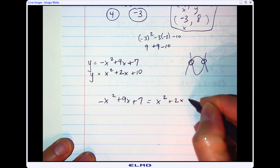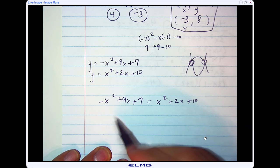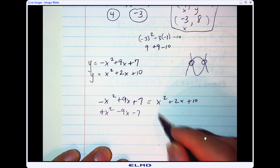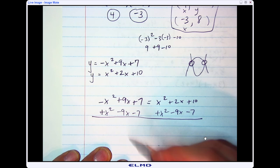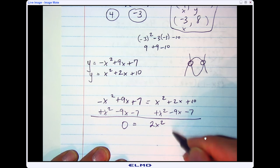Now it doesn't really matter which one you move to make it equal to zero, but I usually like to keep my x squared positive. So I'm going to move this whole equation over to the other side by doing the opposite of everything. So when I do that, this side would equal zero, and over here I would have 2x squared minus 7x plus 3.